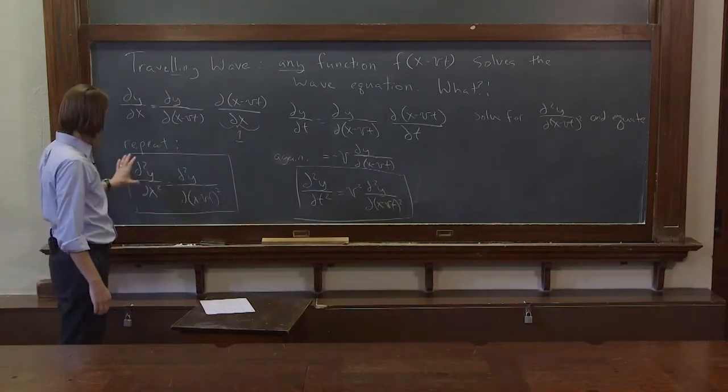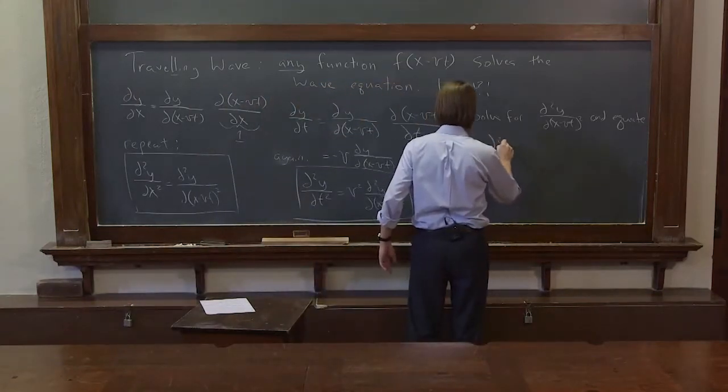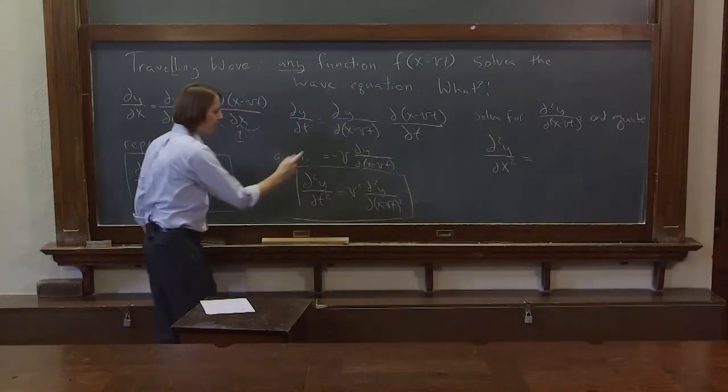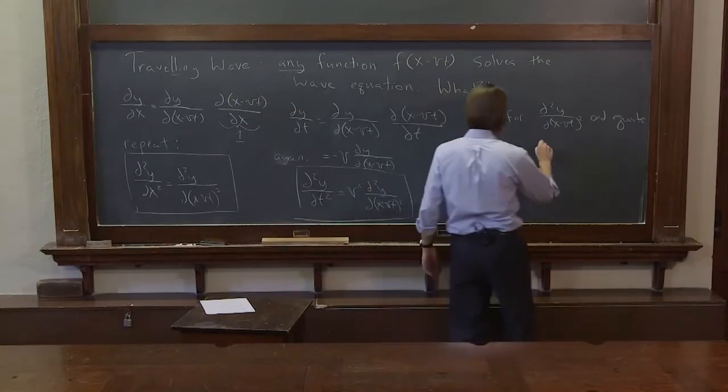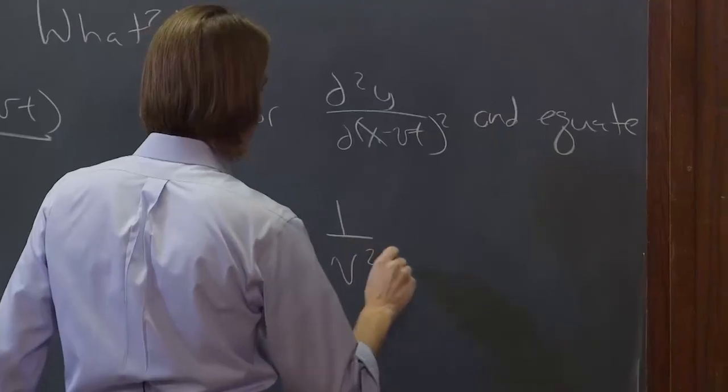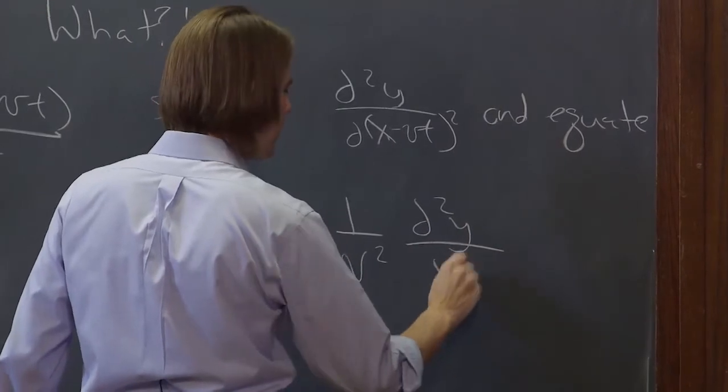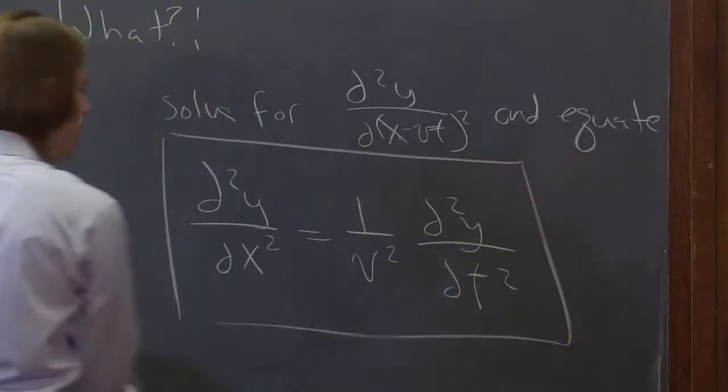Or d²y/dx², and then we solve this one for d²y/d(x-vt)². And it's 1 over v squared d²y/dt². 1 over v² d²y/dt². So without quite as much drama, we have created the wave equation again.